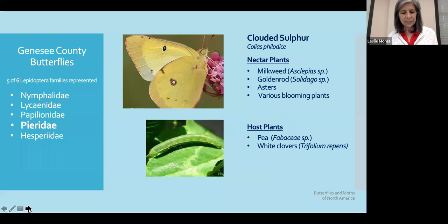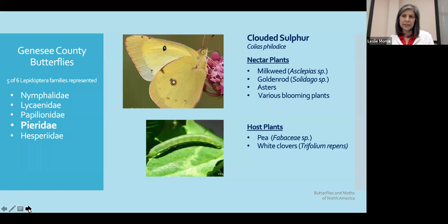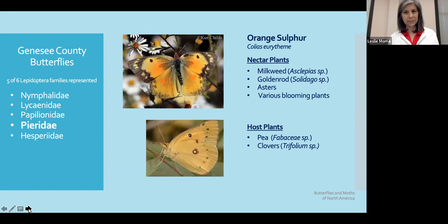Our next family is the Pieridae — the sulfurs and the whites. The majority of whites and sulfurs feed on legumes and crucifers, meaning peas and cole crops. The females lay eggs on the leaves, buds, and stems — almost every part of these plants except the roots — and lay their eggs in a columnar form. Typically they overwinter in the pupal or larval stage in our temperate climate. Here we have the clouded sulfur, which likes milkweed, goldenrod, and asters — again, these short corolla flowers — but their host plants for caterpillars are going to be in the Fabaceae family, so peas and clovers.